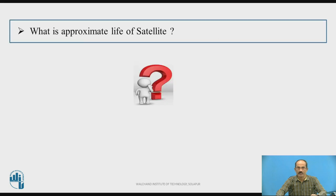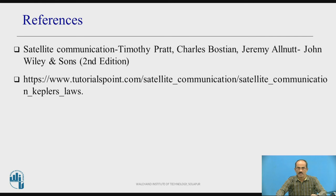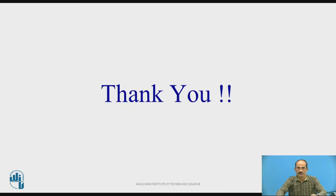What is the approximate life of a satellite? Pause the video and try to think about it with your existing knowledge. The average life of a LEO satellite is around 5 years, whereas for a geostationary satellite it is around 8 years. The life of a satellite is decided by the life of the rechargeable battery inside the satellite. These are the references used to prepare the above presentation. Thank you.